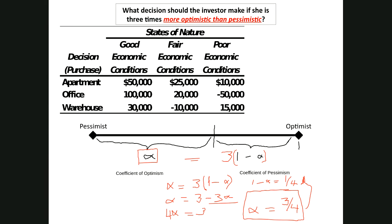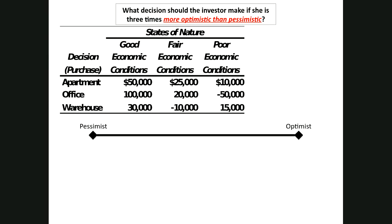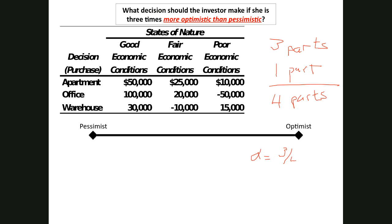There's another way to reason through this. There's three parts optimism and one part pessimism, for a total of four parts. So alpha equals three out of those four total parts, and one minus alpha is one out of four parts. Now the question becomes: how do we apply that to help us make our decision?